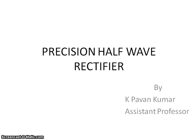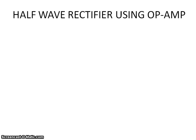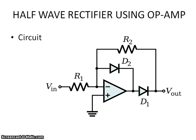Here in this precision rectifier I am going to make a circuit using an op-amp. By using an op-amp we do not need to worry about the 0.6 volt drop across the diode — the complete voltage is provided by the op-amp. This combination of an op-amp and a single diode we can call a precision diode. Here we can observe the op-amp rectifier circuit.